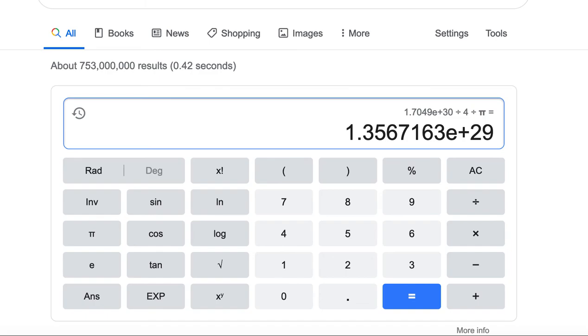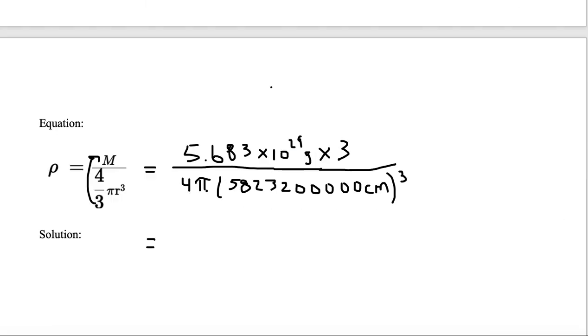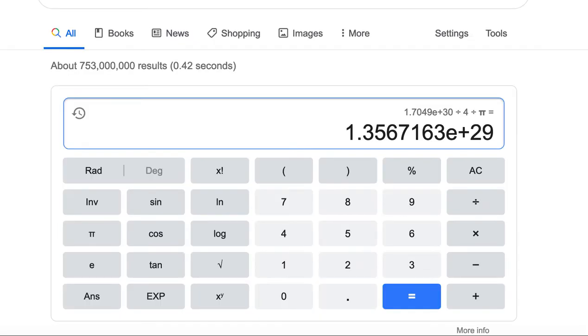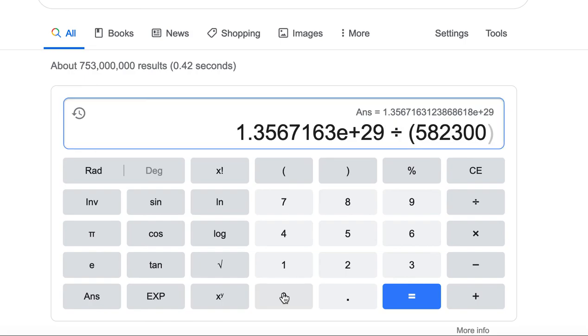Because if you look at the equation, we divide by 4 pi. Then we need to divide by this huge parentheses, which is 5,823. So you divide by parentheses, 5,823, 2, 0, 0.